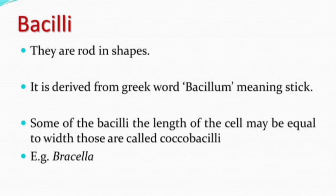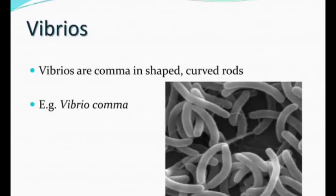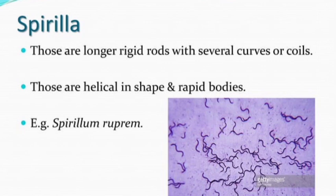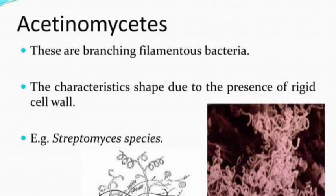Bacilli are stick-shaped; the length of the cells may be equal, and those are called coccobacilli — for example, Brucella. Vibrios are comma-shaped curved rods — for example, Vibrio comma. Spirilla are longer rigid rods with several curves or coils, spiral in shape. Spirulum is helical shaped with a slight curve and coiling type. Actinomycetes are branching, filamentous bacteria — their smell is like the scent after rain, and a best example is Streptomyces species.